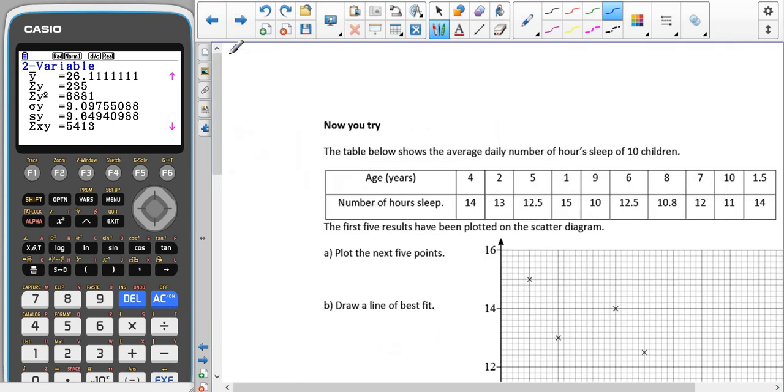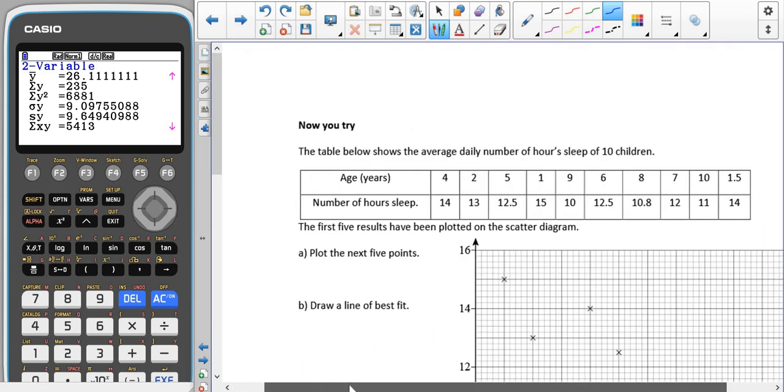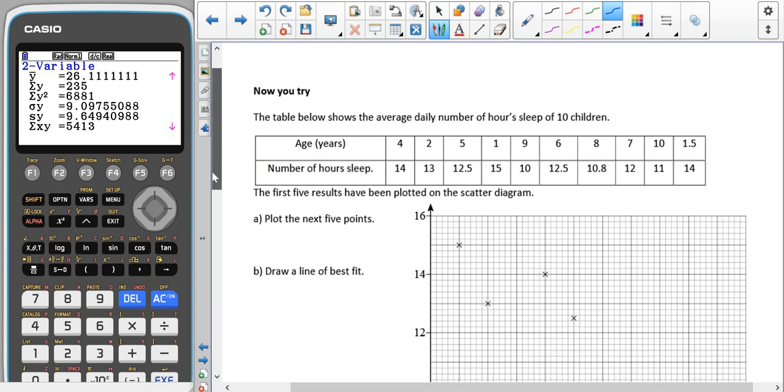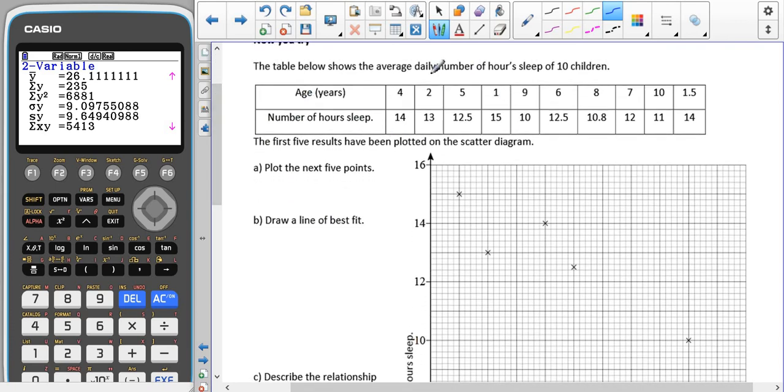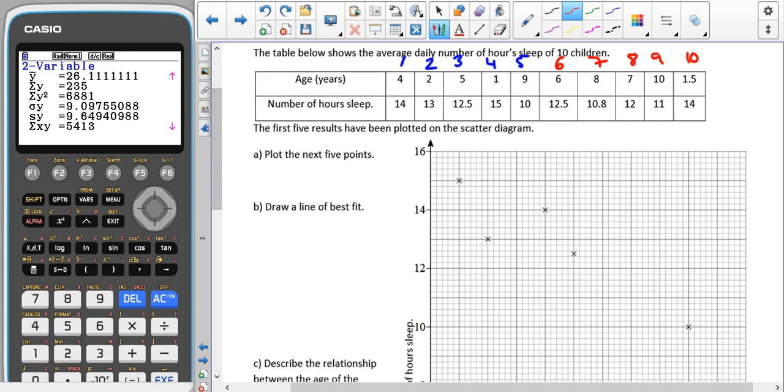So now I'd like you to try the now you try question again. Most of the data has been plotted. The first five results have been plotted for you, so it's only going to be number six, seven, eight, nine and ten that you have to plot on there yourself. So give it a try and then continue with the video.